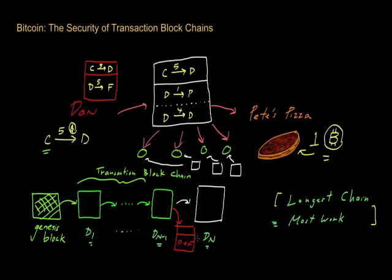But the challenge for Dan is that he's starting off at a bit of a handicap, because there's already this longer chain out there that people have started accepting. Other nodes may have started to build on top of this chain — every 10 minutes on average somebody is adding to it. So Dan wants to create his own fake chain, and in order for it to be believable, it has to be the longest chain out there, requiring him to do all these proof-of-works.